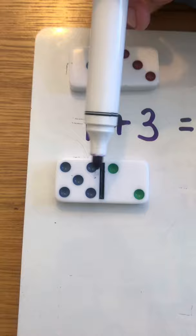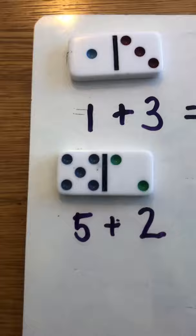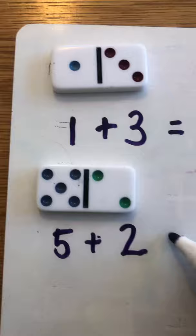Next up count the dots in the first set one two three four five. Count the dots in the second set plus one two and all together that makes one two three four five six seven.